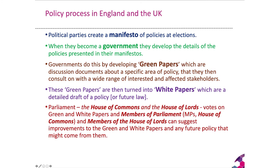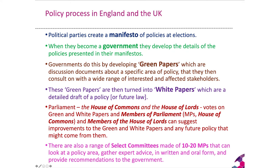The white papers and green papers go to Parliament — the House of Commons and the House of Lords — and are voted on by members, who can also suggest improvements. Depending on how the government feels, they will either take up those recommendations or ignore them. There is also a range of select committees made up of 10 to 20 MPs that can look at a policy area — some are appointed by government and others are always sitting regardless of who is in government. They gather expert evidence and evidence from the general public in written and oral form and provide recommendations to government.